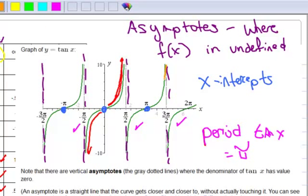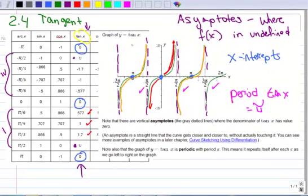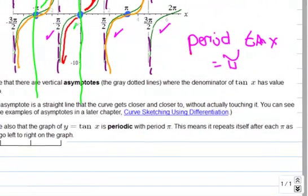So one complete cycle looks like that. In this particular graph, I've got three cycles shown. It's also interesting to note that a cycle doesn't have to go just from asymptote to asymptote. It could go from x-intercept to x-intercept. That's a cycle or a period. Notice that you get the top half here and the bottom half here, but it then starts repeating itself.